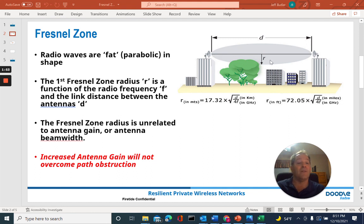It's also important to understand that these are the only variables. The frequency of the transmitted signal and the distance between the antennas are the only variables that affect radius r. Therefore, if you increase the gain of the antenna or decrease the antenna beamwidth, those effects will have no effect on the shape of the Fresnel Zone from transmitter to receiver. Therefore, they will have no effect on overcoming any objects in the path of the Fresnel Zone.